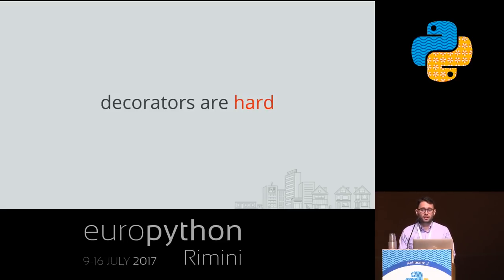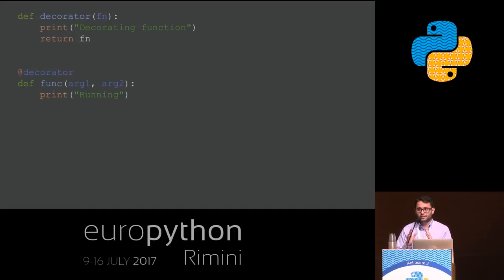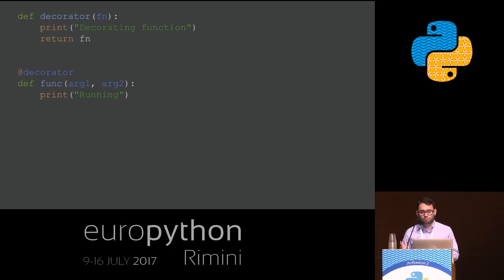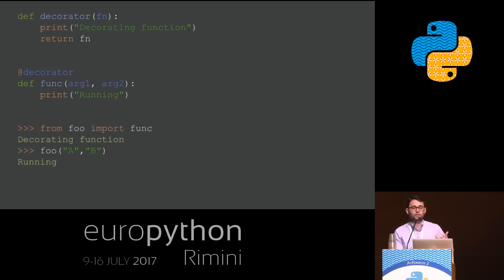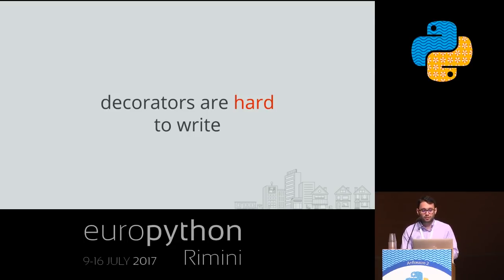This is the simplest decorator ever made. What it does is just print 'decorating function' when the function is decorated. Pretty useless, but it's a decorator and it works. If we execute it in the Python interpreter, the first time we import the function, the decorator is executed and 'decorating function' appears in the output. Then every time we execute the function, nothing happens — it just runs the regular function. So after this, maybe you can think that decorators are easy to write. Again, not entirely true.